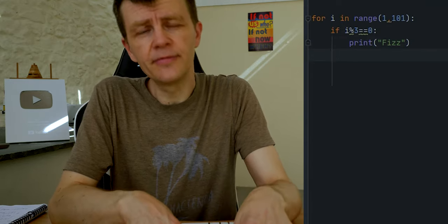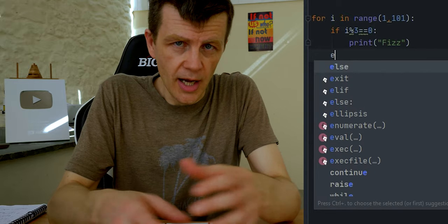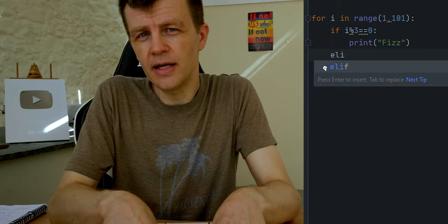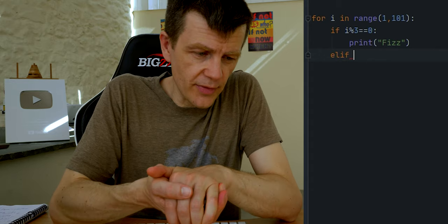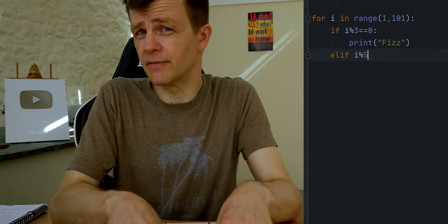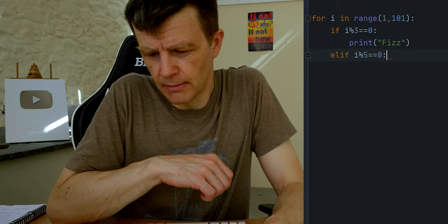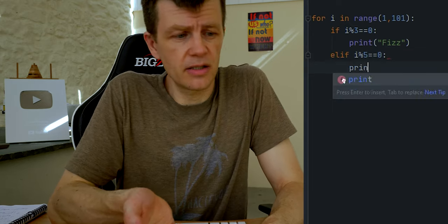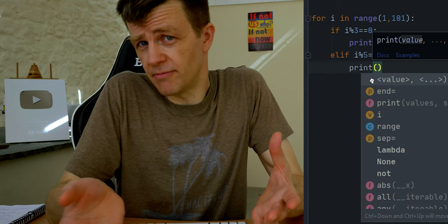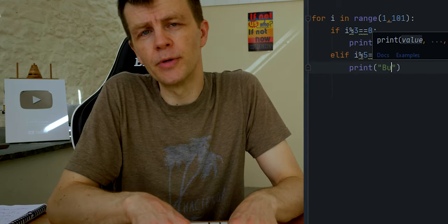And then we're going to test, we're going to do a conditional. If the number that we're on, i in this case, if i divided by three, if the remainder of i divided by three is zero, so i modulo three, if that's zero then the number is a multiple of three, so that's fizz. So if that's true we'll print fizz.